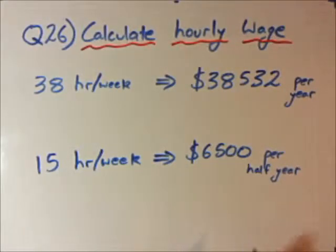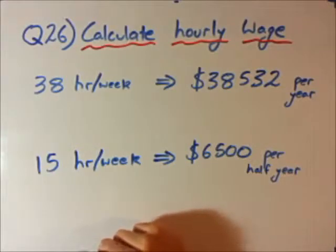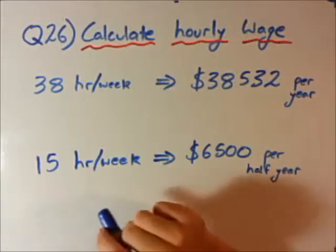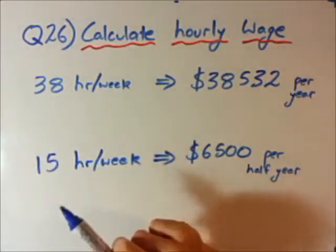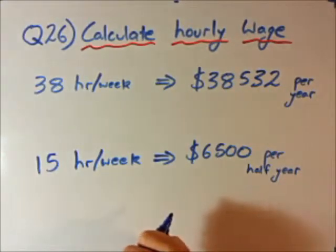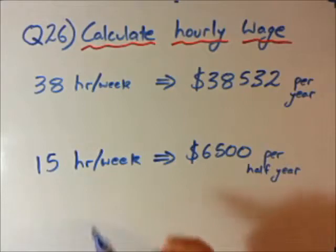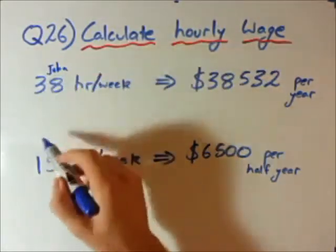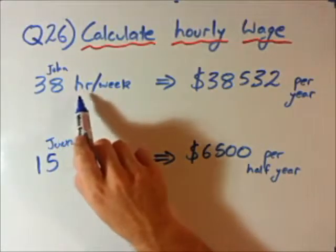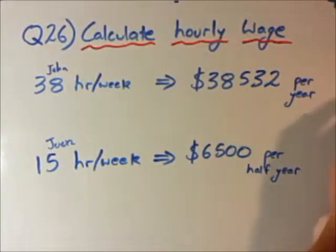Question 26 looks at some real-life examples — hourly wages and how much you get paid per year. There are two examples and we need to find the hourly wage in each. John works 38 hours per week and takes home $38,532 per year. We'll assume he works all 52 weeks per year.